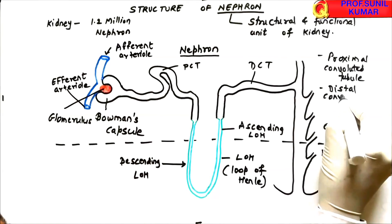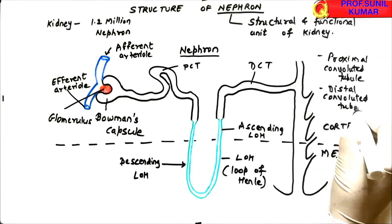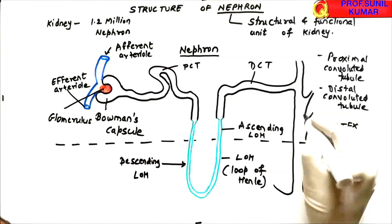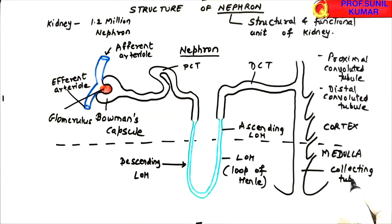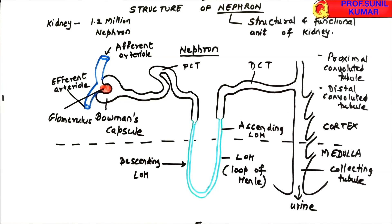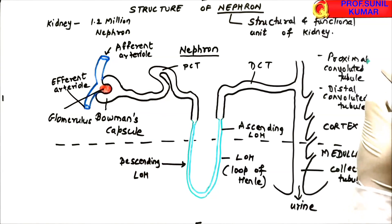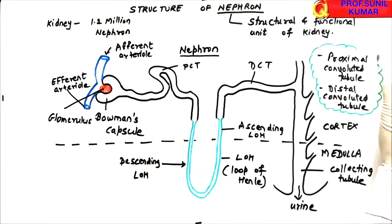The DCT is away from the Bowman's capsule, which is why we call it the distal convoluted tubule. The PCT is near the Bowman's capsule, hence proximal convoluted tubule. The final tubule, which collects the urine, is called the collecting tubule, and through it all the urine is collected in the renal pyramid. Remember the full forms of PCT and DCT — proximal convoluted tubule and distal convoluted tubule.